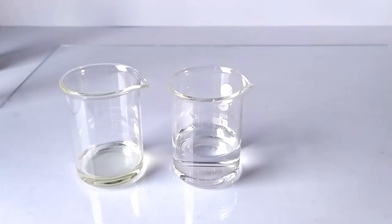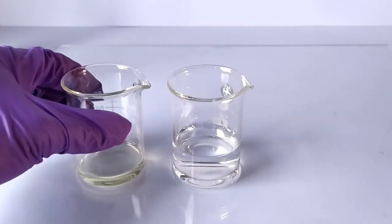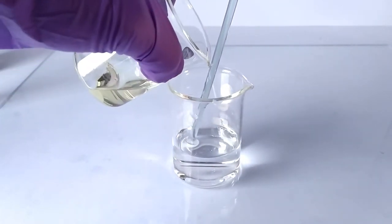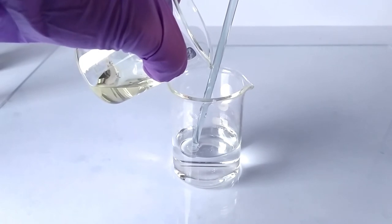Now take the beakers containing the dissolved mercury chloride and the potassium iodide solutions. Slowly and carefully add the iodide solution to the mercury chloride solution with intermittent stirring.